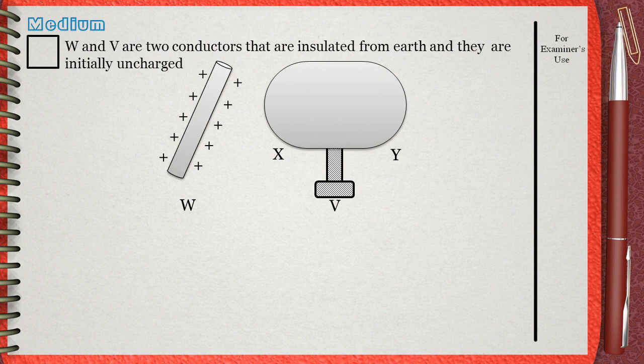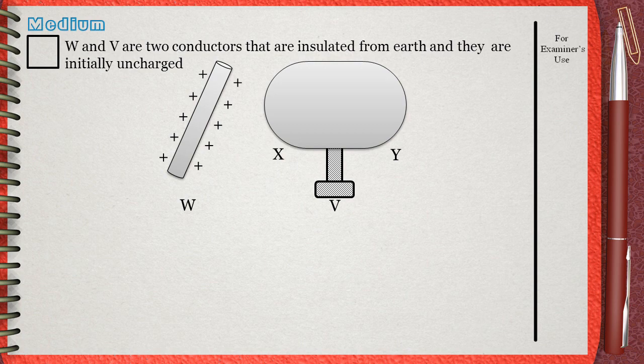This question is medium. W and V are two conductors that are insulated from earth and they are initially uncharged. Conductor W is now positively charged.